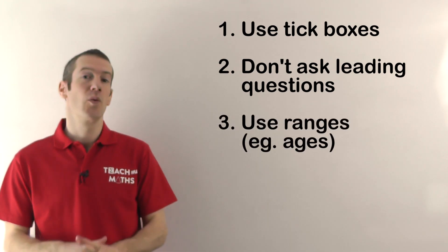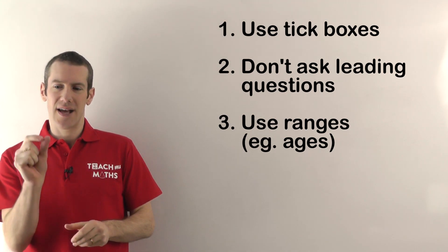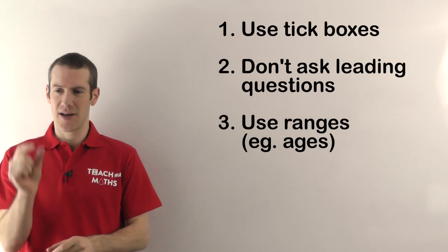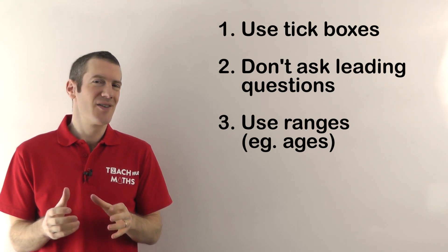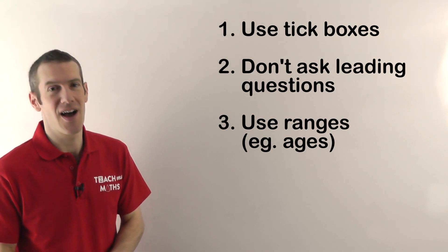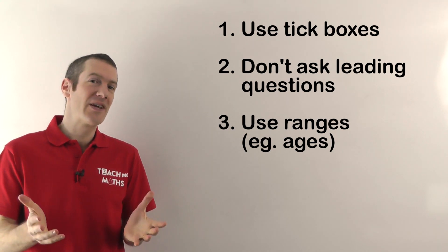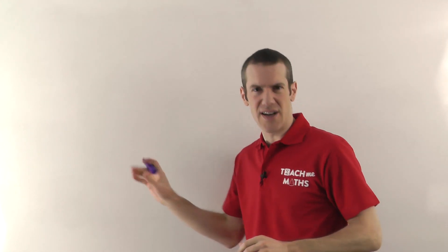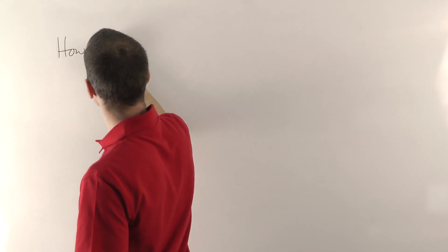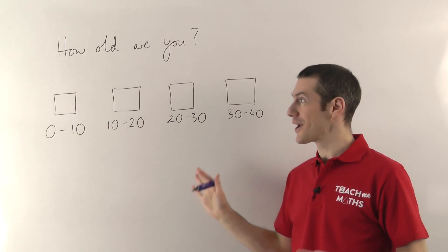And this is what I was talking about before with the age thing. The slight problem of asking somebody how old they are is that if you just have individual ages, if your tick boxes say 20, 21, 22, 23, etc., then somebody might not want to tell you exactly how old they are and they'll probably just lie and tick something usually on the lower end. But let me give you an example of what you could do to get around this problem. So here's an example question.